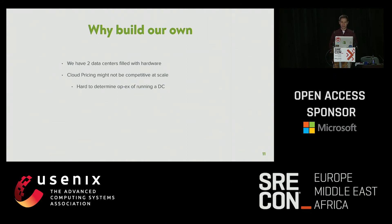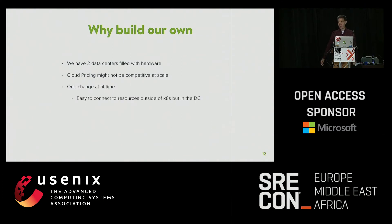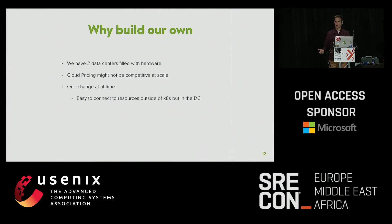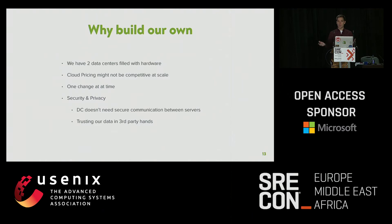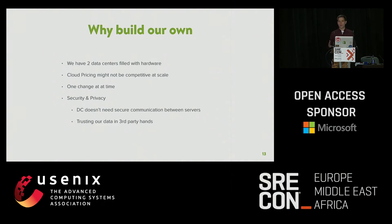Cloud pricing is competitive, but it may not be quite as cheap as running your own data center. But there's more than just money. In the data center, there's one change at a time — we could move our stateless applications into Kubernetes and leave our databases where they are. It's easy to connect resources outside of Kubernetes with no extra latency, since we're using the same servers in the same locations. Whereas moving one piece at a time into the cloud adds latency from the cloud provider to our data center, and latency hurts.